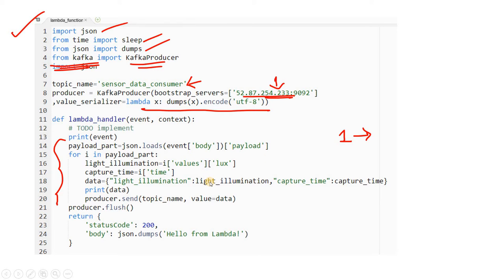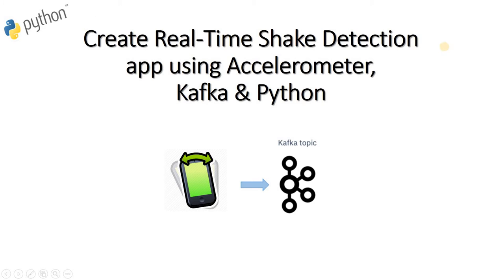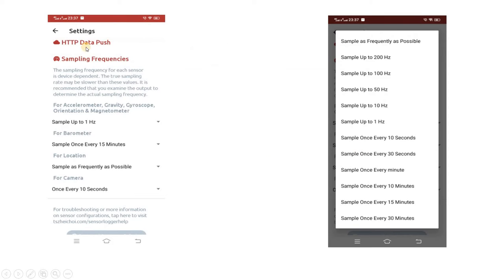Today in this video we are going to work on another very interesting small project related to sensor data capture, and that is real-time shake detection. We are going to create a real-time shake detection app using accelerometer, Kafka, and Python. If you shake your mobile phone, the accelerometer data will rapidly change - acceleration along X, Y, and Z axes. That data will be published to a Kafka topic, and if the sum of the magnitudes across all three directions exceeds a threshold, we consider the phone is shaking.